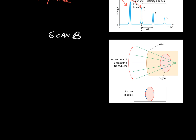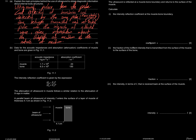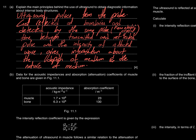Moving on to an exam question from May/June 2009 Paper 4. The first part asks: explain the main principle behind the use of ultrasound to obtain diagnostic information about internal body structures. Ultrasound pulses are sent from the probe, reflected from boundaries, and detected by the same probe. The piezoelectric crystal creates and detects the ultrasound wave. The time between transmitted and reflected pulses gives the thickness of the medium, and the intensity of the reflected wave indicates the nature of the medium — fat, muscle, bone, or other tissue.